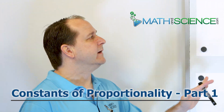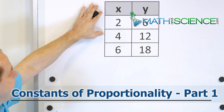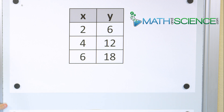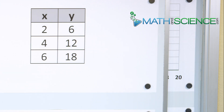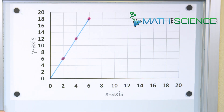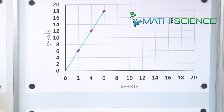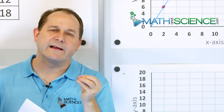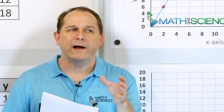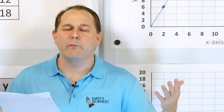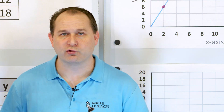In the last lesson, we took raw data — much like these XY points here, which I've taken directly from the last lesson — we plotted those points, and we investigated what makes a set of points form what we call a proportional relationship.